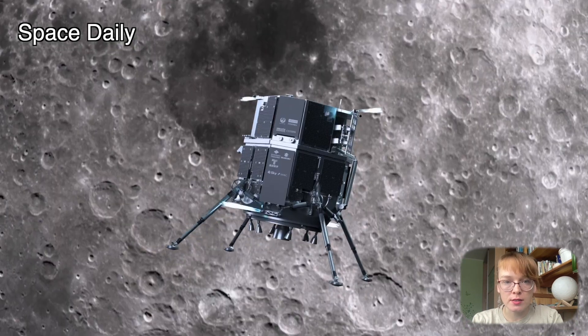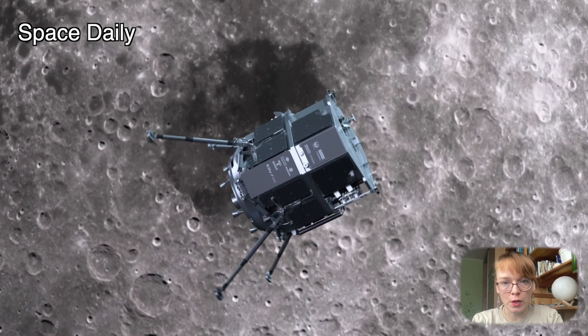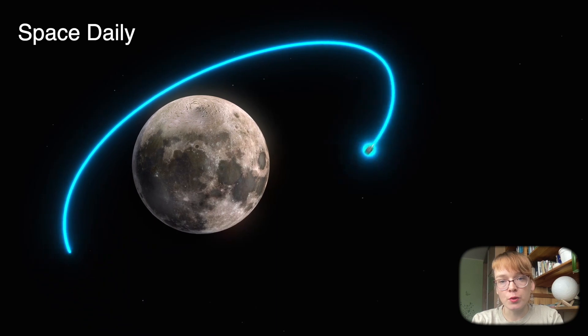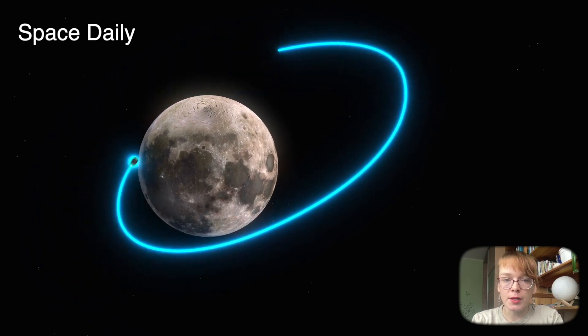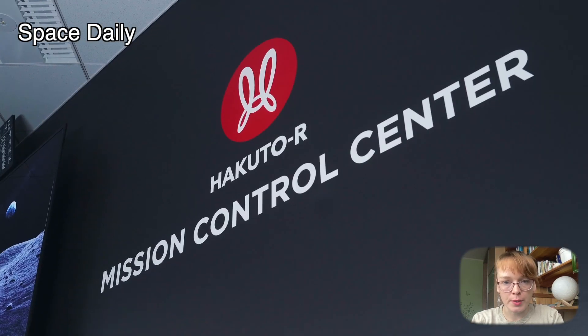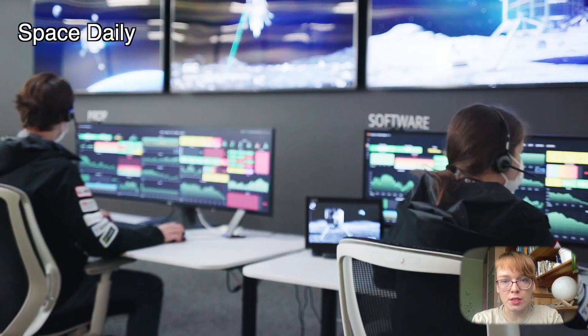Tokyo-based iSpace said its Hakuta R-Mission-1 lunar module entered orbit on March 20. The company did not disclose orbital parameters, but said the maneuver was successful.